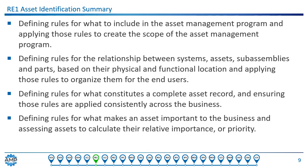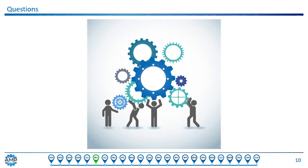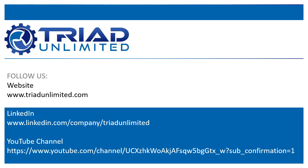We define rules for what is a complete asset record and bring in all the stakeholders that are going to use that information — we don't do it in a vacuum, because different entities want different things from the information. And finally, we define rules for what makes an asset important to the business. Not every business is the same, but every business needs to categorize assets in such a way that it makes sense to the business and you can start to compare assets and focus resources on the things that are most important. This concludes the Asset Identification Process Descriptions presentation — thank you for participating.